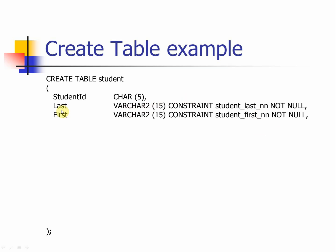After the column name, data type, and size of the attribute have been defined, we add something called constraints and give a constraint name, then specify what kind of constraint we want. These are the constraint definitions for the attributes we are creating in this table. We will have more slides to discuss constraints. The constraints we can add include primary key, foreign key, not null, check, and others — all of these can be added to the attributes.